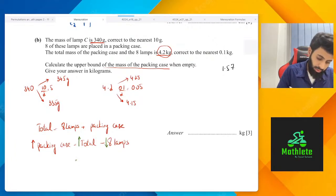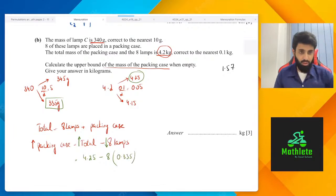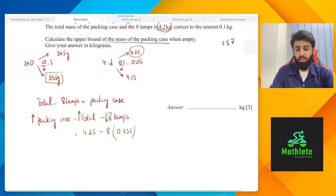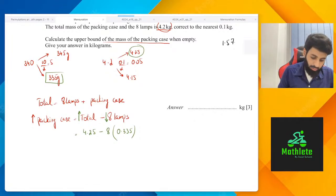Total, the good thing is we've already worked out, is 4.25 kilograms minus eight times the lower bound of the lamps. So the lamps lower bound is 335 grams, but since it's kilograms, it's going to be 0.335. Now let's work this out: 4.25 minus 8 into 0.335. We get 1.57 kilograms, which is the correct answer.